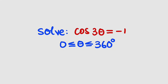Hello, good dear viewers. In this tutorial, we are going to find a solution to the trigonometric equation cosine of 3 theta equal to negative 1, where theta is from 0 to 360 degrees. I'm going to show you two different ways to solve this — the harder way and the simple way. Let's start with the harder way.